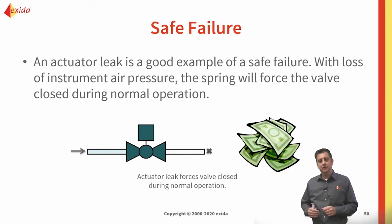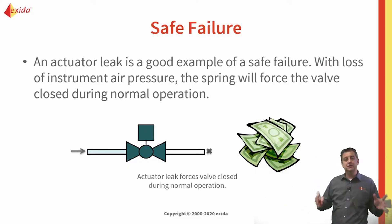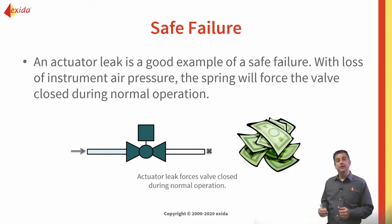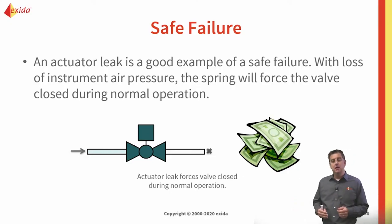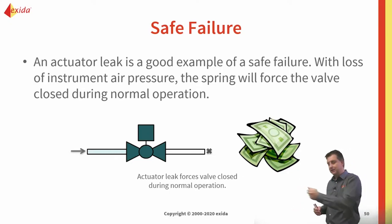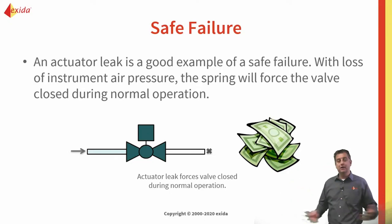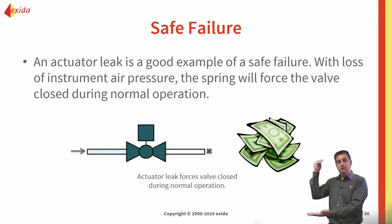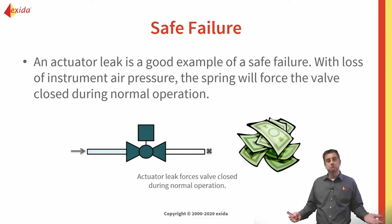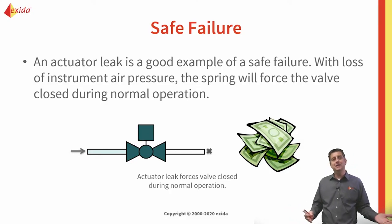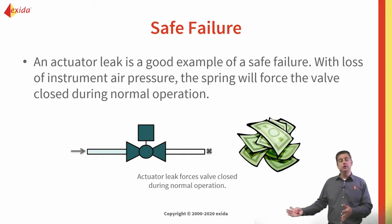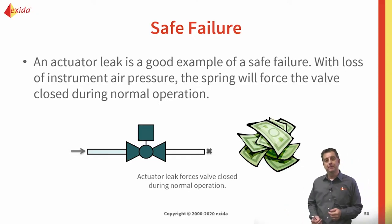What are safe failures? Safe failures are failures that bring the process to the safe state when there is no dangerous or hazardous scenario. An example would be: I have flow going, I just want to keep operating and producing, and for whatever reason that valve suddenly closes. We don't like these failures because they shut down our process, meaning we're not producing and we lose money.